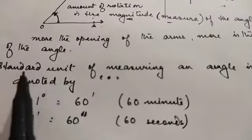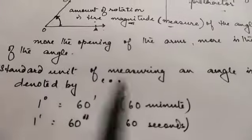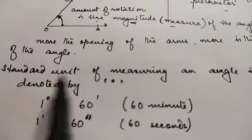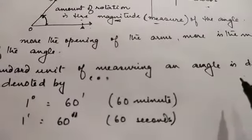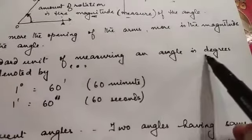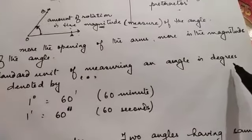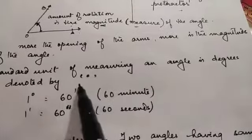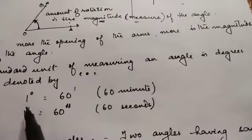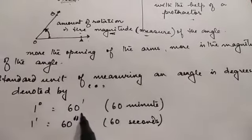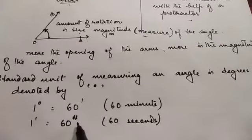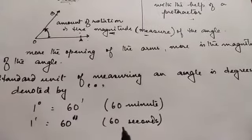We measure angles with the help of a protractor and the standard unit of measuring an angle is degrees, denoted by the degree sign. 1 degree is equal to 60 minutes and 1 minute is equal to 60 seconds.